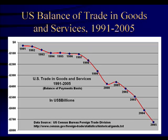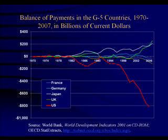The balance of trade in goods and services between 1991 and 2005 in the United States went from a relatively modest $30–$40 billion in 1991 to over $700 billion in deficit. The US balance of payments deficit has also grown during that same period of time. Generally, the balance of trade and the balance of payments move in the same direction.